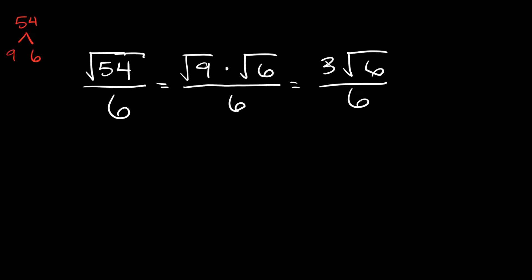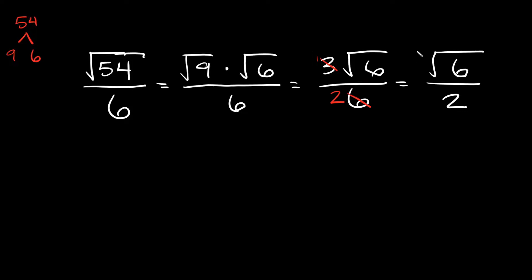Now we can simplify things here because the square root of 9 is equal to 3. So we simplify this to 3 times the square root of 6 on top over 6 on the bottom. Then we can reduce 3 over 6 down to 1 over 2, so we're left with the square root of 6 over 2.